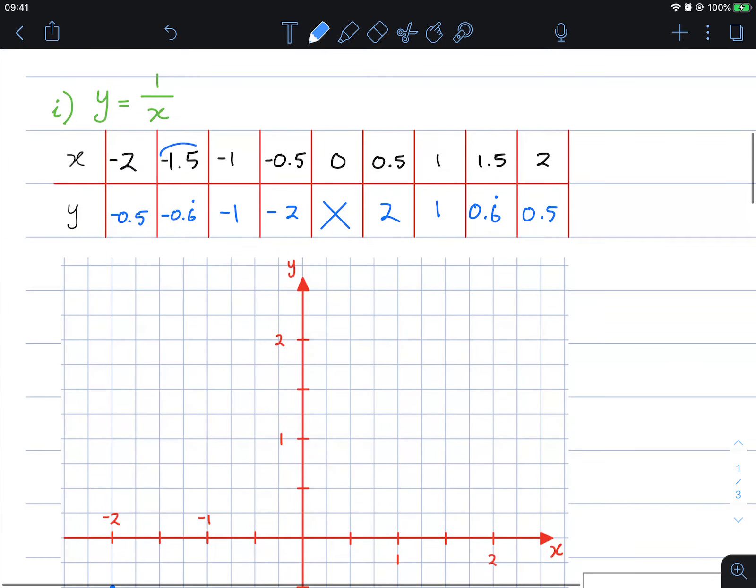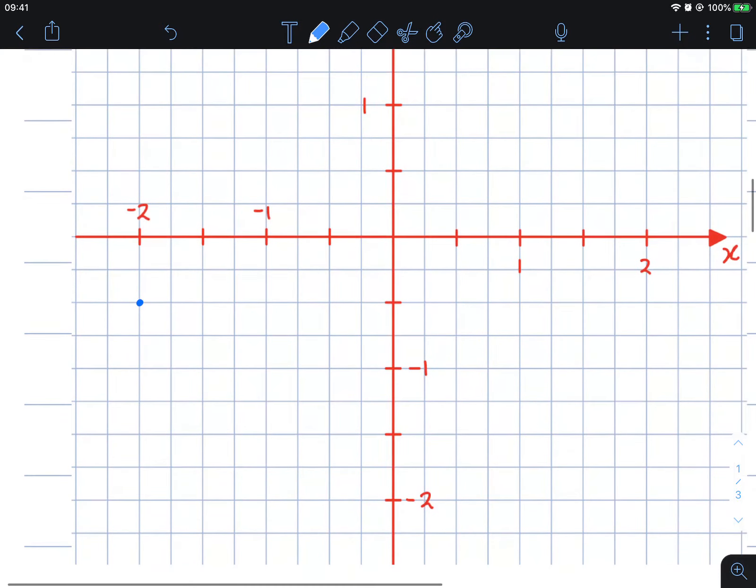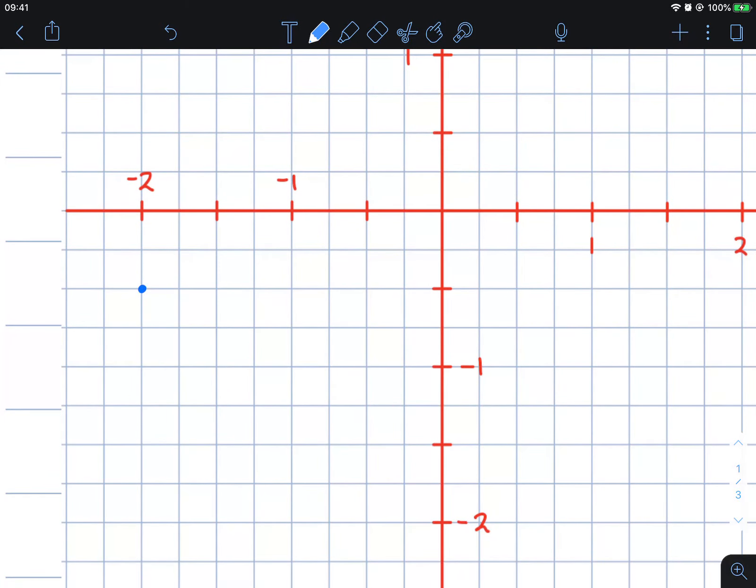Negative 1.5, negative 0.6. 0.6 is slightly larger, so this is going to be 1.5 here. This is 0.5, 0.75, so slightly below that should be around about here.